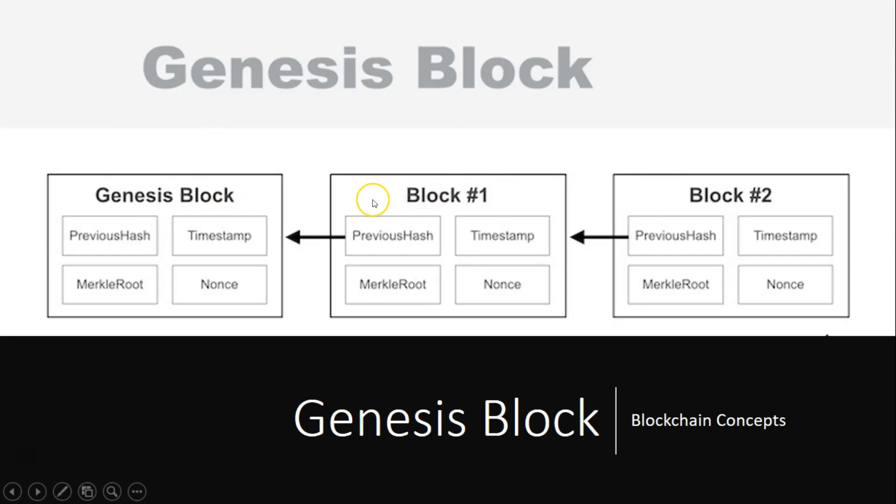A typical block includes some values in it, but when it comes to the genesis block, the previous hash key is present but its value is blank because it is the first block in the blockchain. The genesis block is almost always hard coded into the software of the application that utilizes its blockchain. It is a special case in that it does not reference any previous block.